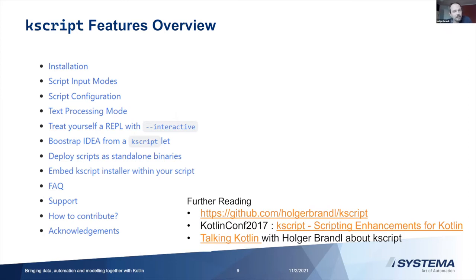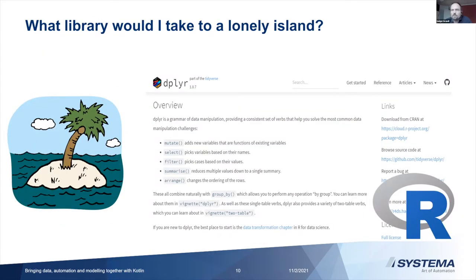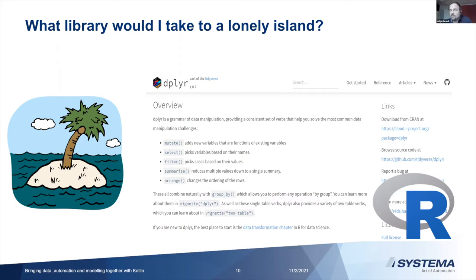But KScript wasn't doing anything about data or data science. I thought: if I had to go to a lonely island, which library would I take? As a data scientist I care mostly about data — not TensorFlow or similar, but in the end it boiled down to an R library called dplyr. If I really had to pick one library it would be dplyr, because it's the most evolved grammar for data manipulation out there — more so than pandas in my opinion. But if the lonely island is the Kotlin island, I can't run it there.